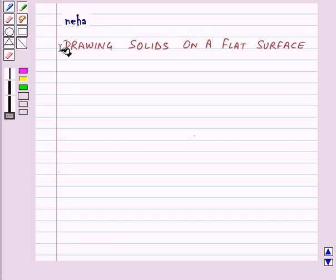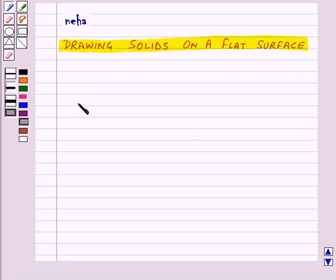Hi and welcome to the session. Today we will learn to draw solids on a flat surface, say a paper. For that we will use two techniques: first is drawing oblique sketches and second is drawing isometric sketches.